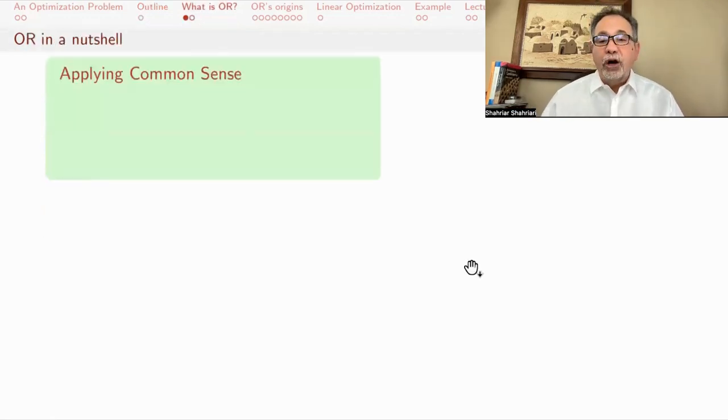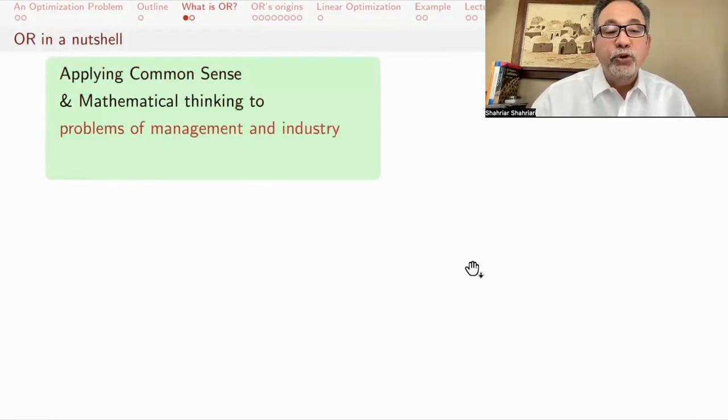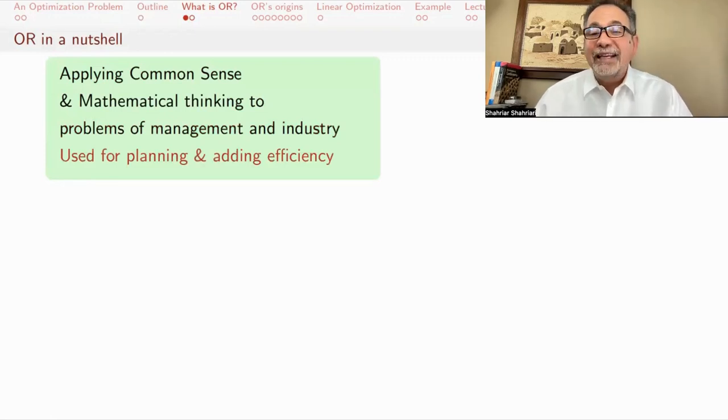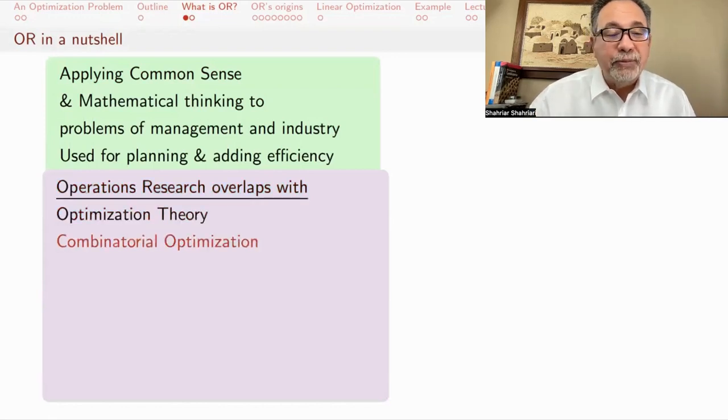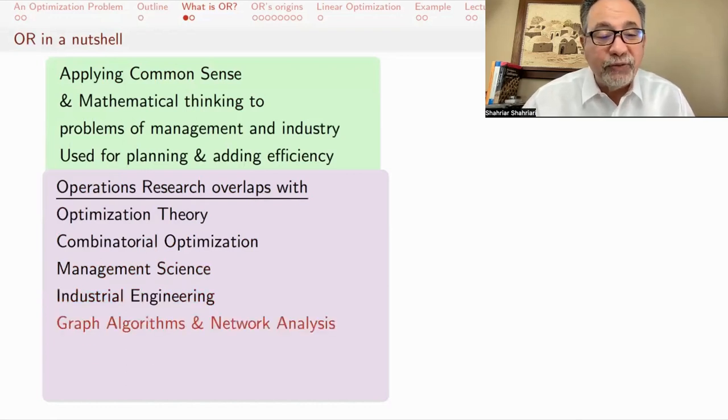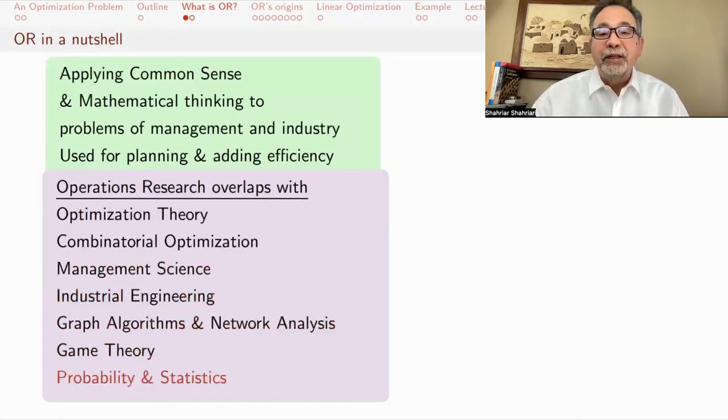In a nutshell, OR, operations research, is applying common sense and mathematical thinking to problems of management and industry. It's a way for planning and adding efficiency. Operations research overlaps with a number of different areas: optimization theory, combinatorial optimization, management science, industrial engineering, graph algorithms and network analysis, game theory, probability and statistics. In some cases, like management science, they overlap quite a bit.